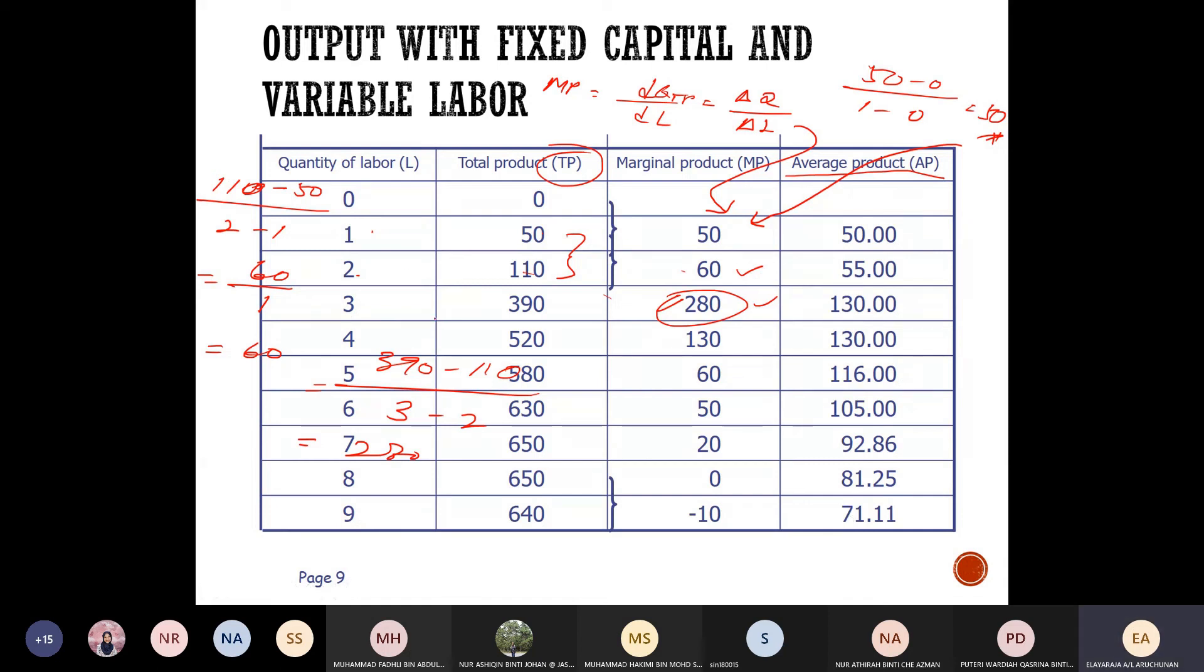Easy isn't it? So now you know how to, by providing these two, the quantity labor and the quantity products, by using the quantity labor and total products, you'll be able to count the marginal product and as well as the average products.